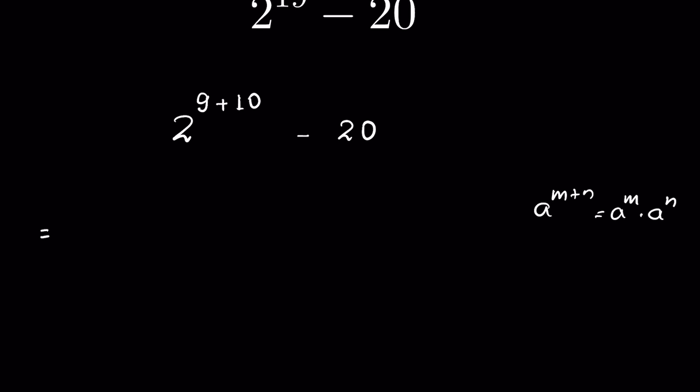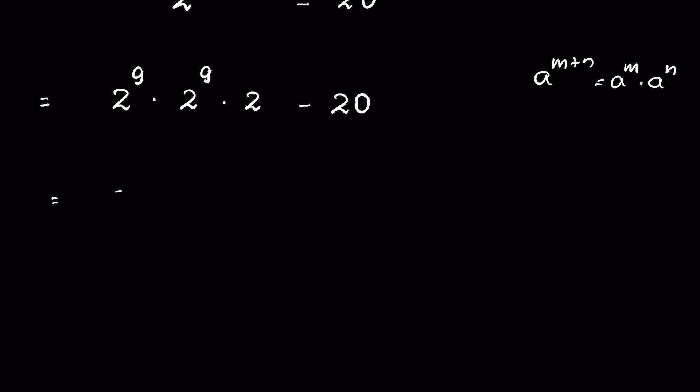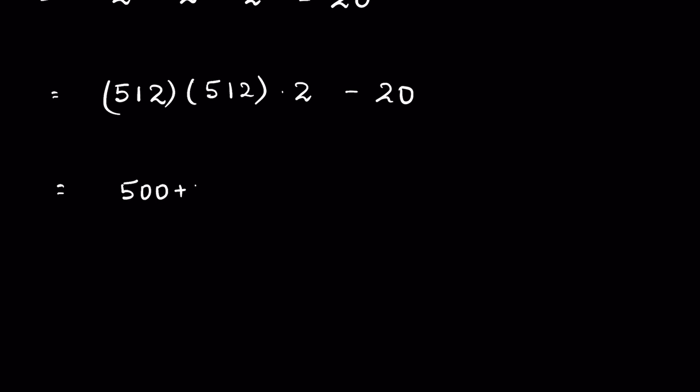So we can write 2 to the power 9 times 2 to the power 10, or we can write it as 2 to the power 9 times 2 minus 20. Now 2 to the power 9 equals 512, then times 512, then times 2 minus 20. Now 512 we can write 500 plus 12, then times 500 plus 12, then times 2 minus 20.